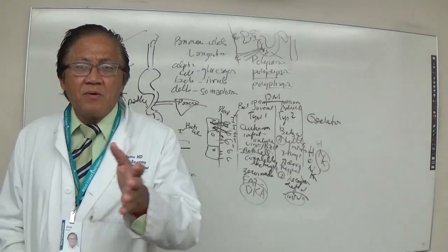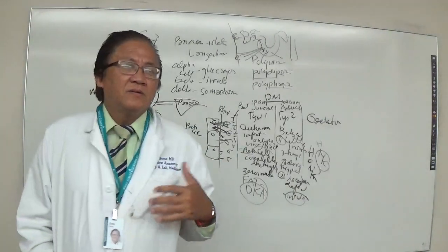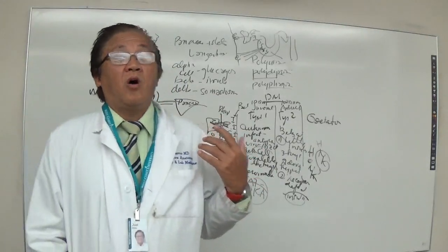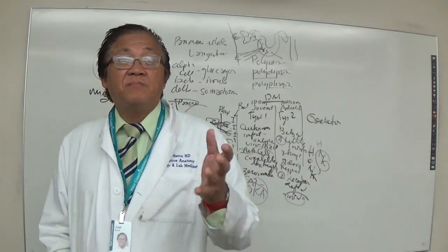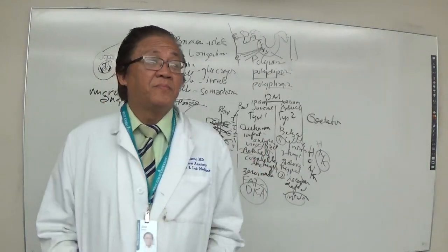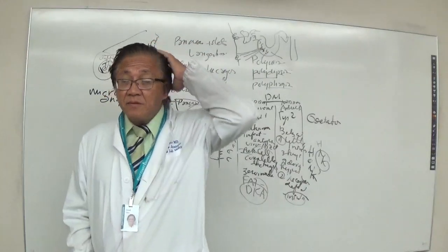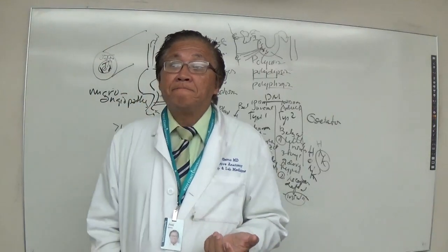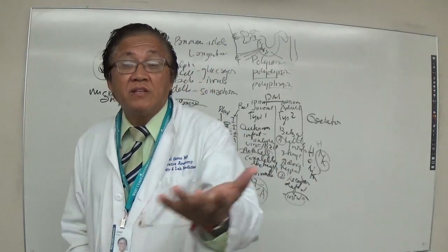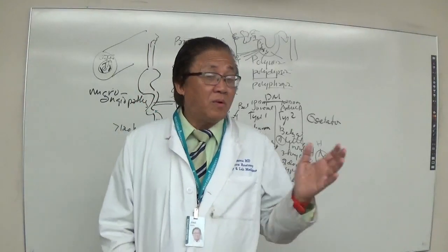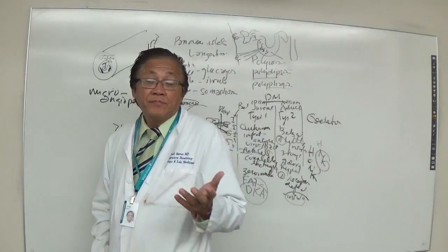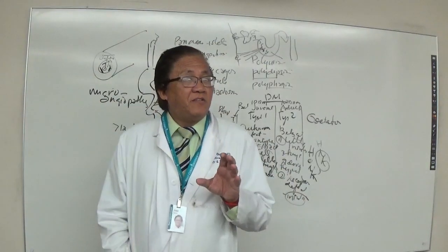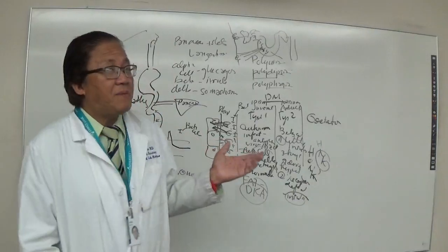Diagnostic procedures for diabetes include fasting blood sugar, glucose tolerance test, and HbA1c. The HbA1c test is important to confirm whether a patient has diabetes and whether it is controlled over the past three months — reflecting the normal lifespan of a red blood cell, which is about 120 days.